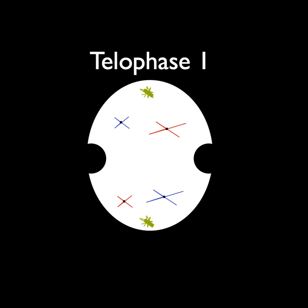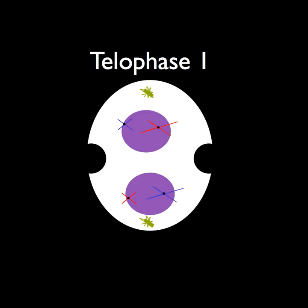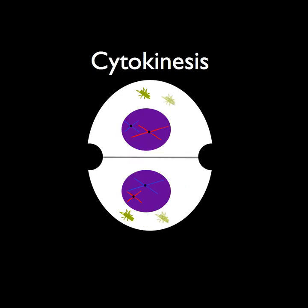This slide is the start of telophase. In telophase, the cell starts to split into two cells. This slide is the start of cytokinesis. In cytokinesis, the cell pinches the membranes and creates two cells, each with its diploid number of chromosomes.